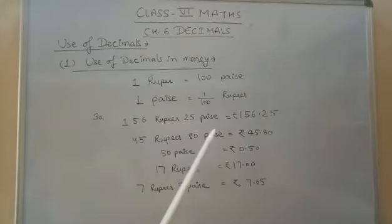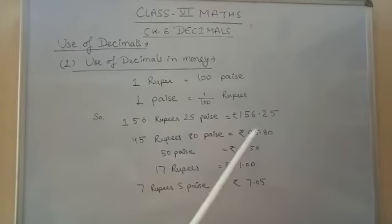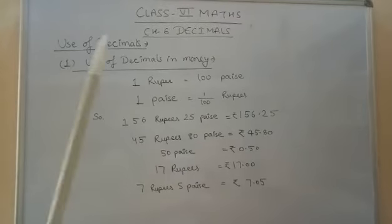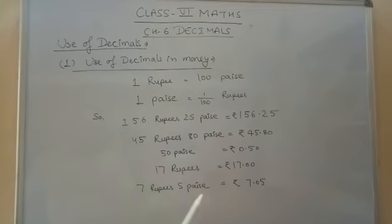45 rupees and 80 paise, that is 45.80 rupees. 50 paise convert into rupees, that is 0.50 rupees. 17 rupees, written as 17.00 rupees. 7 rupees 5 paise, it is written as 7.05 rupees.